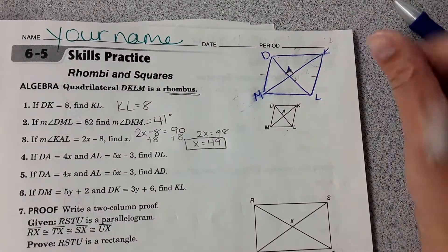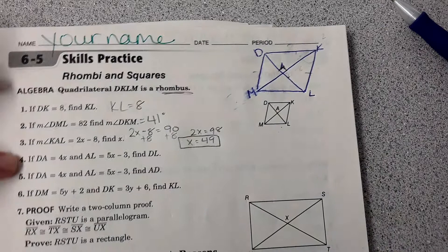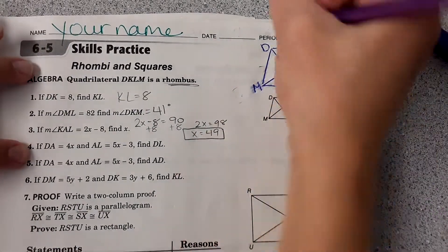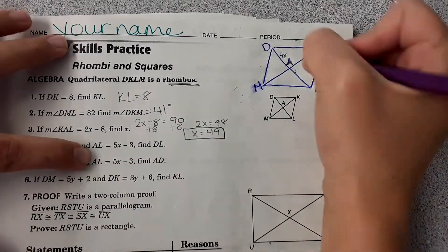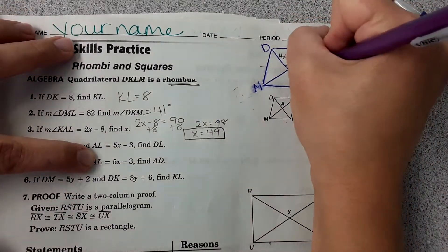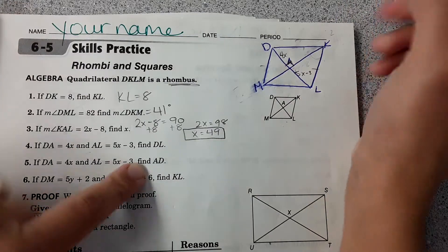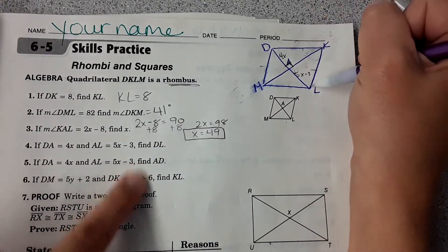Okay, next scenario, number four. It says that DA is 4x, so the length of that segment is 4x. AL is 5x minus 3. Find the length of DL, the entire thing.